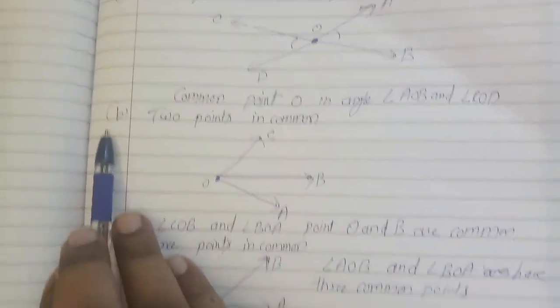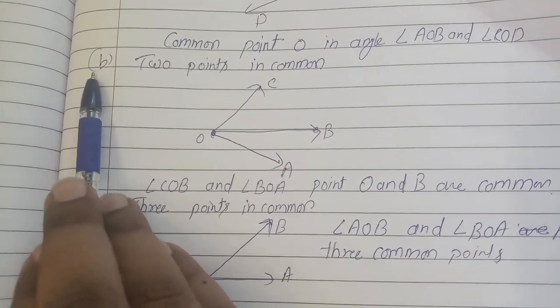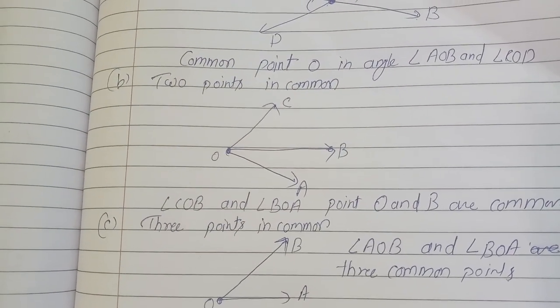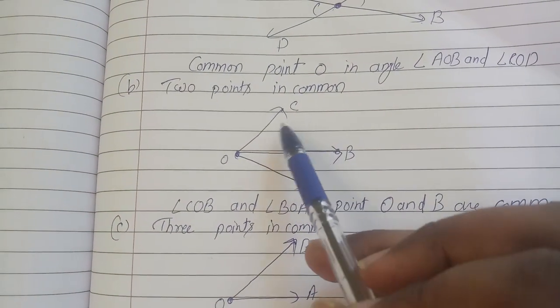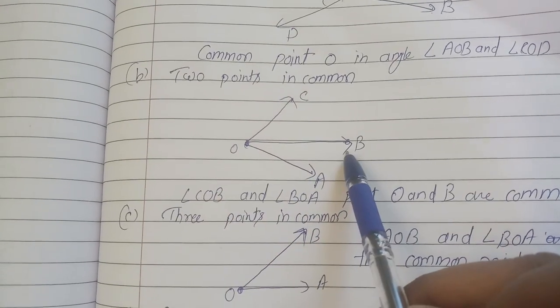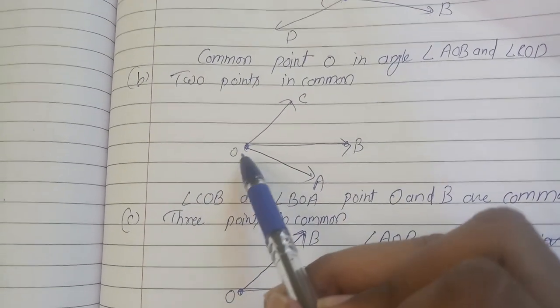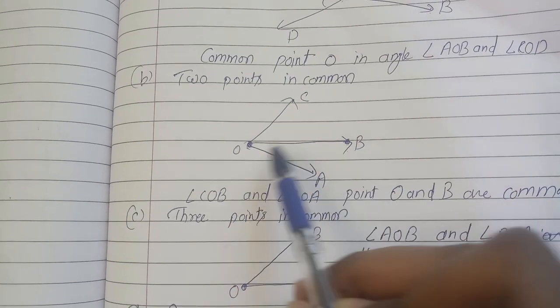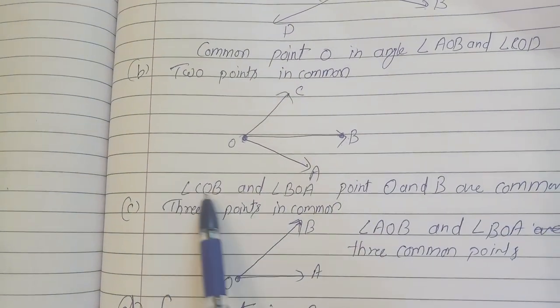Let us move on to B problem: Two points in common. So we need two points which are common. So we have that angle COB and angle AOB. So OB and this O point and B are common in both of this angle.